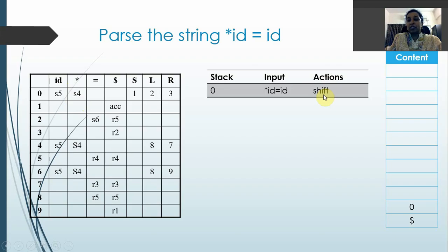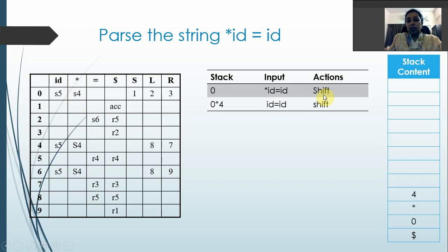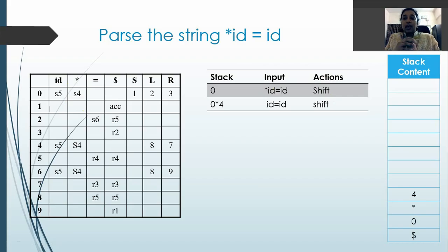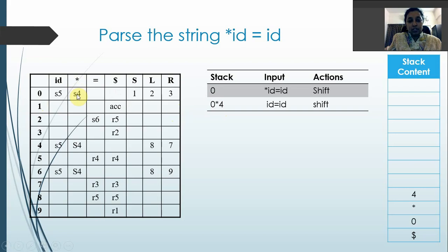The action is shift. When we have a shift action, the leftmost character of the input string is pushed onto the stack. For every grammar symbol pushed, there must be an output state. State 0 is the input state, star is the input symbol, and on state 0 with star we shift to item set 4. So we push star and state 4 onto the stack, and the remaining input string stays.